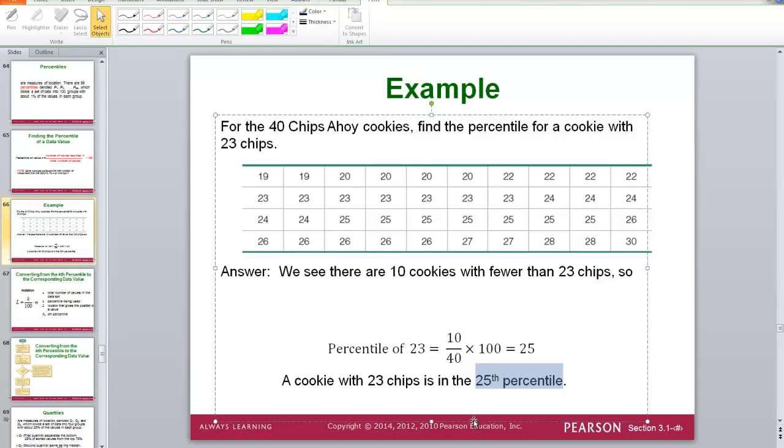Don't make it any harder than it is. You are basically just finding the percentage of things less than that data value. So what percentage of your sample has a value less than the number you are testing.